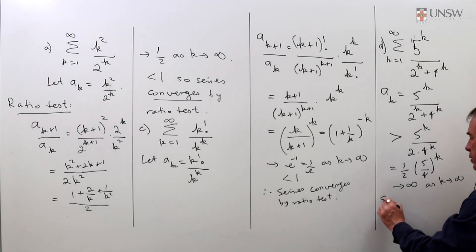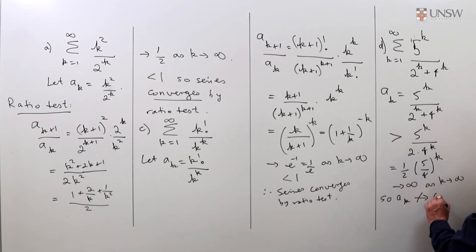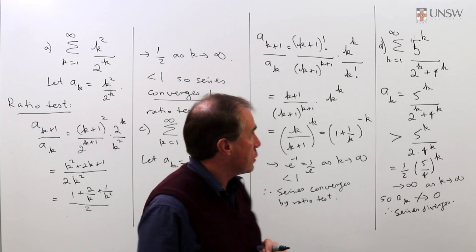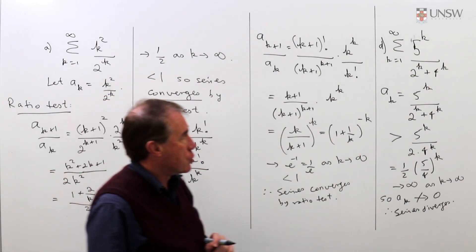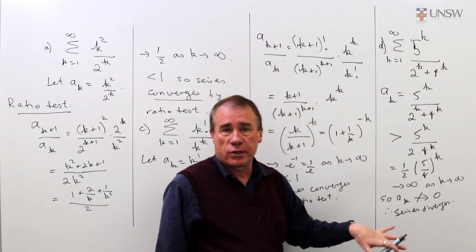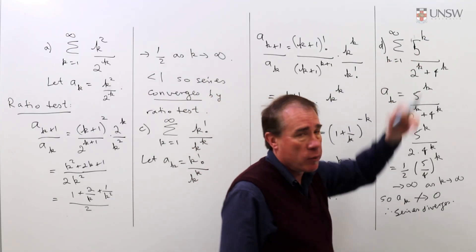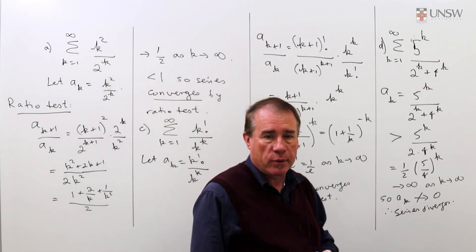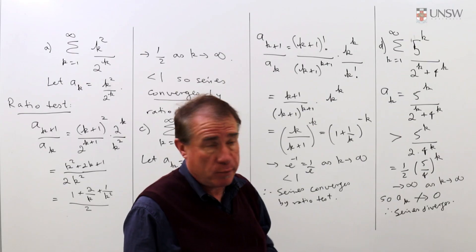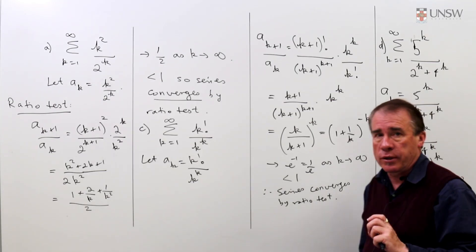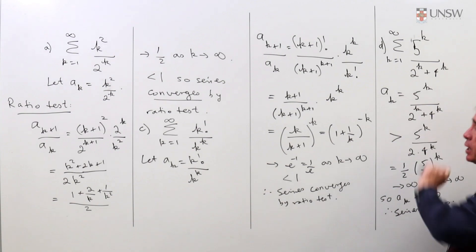So the general term is not going to 0. Therefore we can say that the series diverges by the nth term test or the kth term test, which is the first test you always use when looking at an infinite series. You ask yourself, does it look as though the general term is going to 0? If it's not going to 0 the series can't converge. You might like to try doing it by the ratio test and you'll see a similar thing happening, but this is the alternate way of doing it which you should always be thinking about.